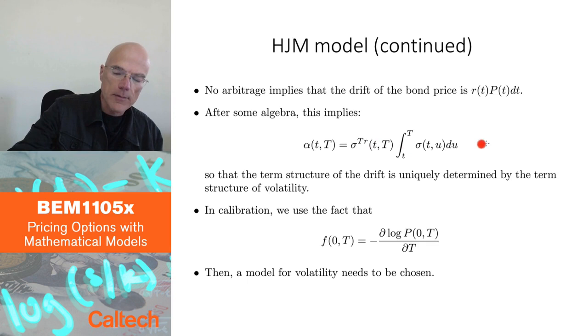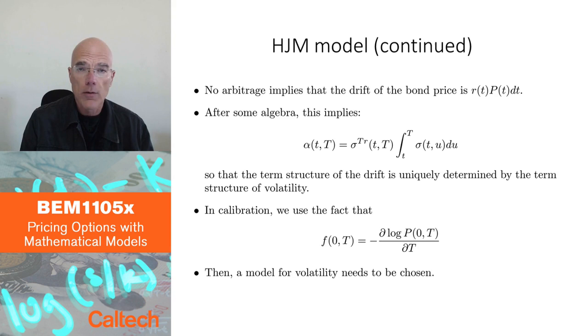That was the main result of Heath, Jarrow, and Morton. And the main idea was to model the forward rates, continuously instantaneous forward rates, and then the result was that the drift has to be like this.